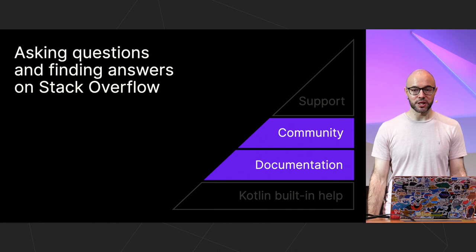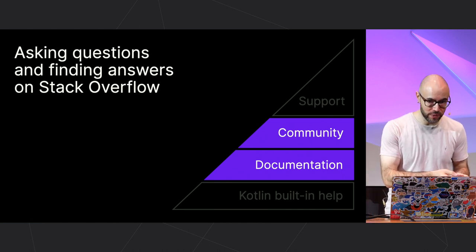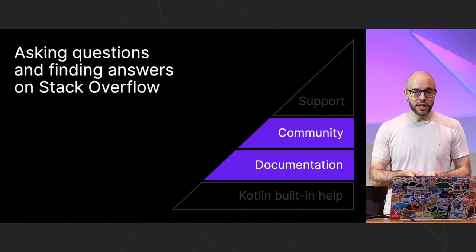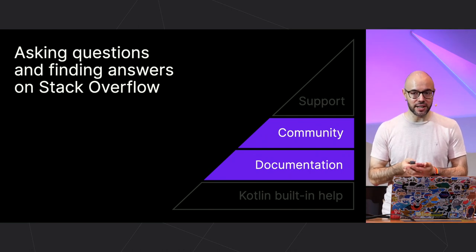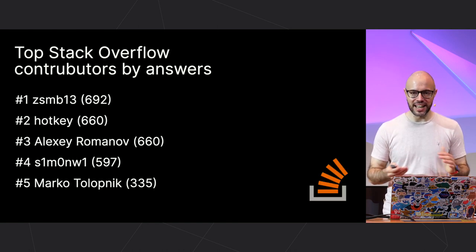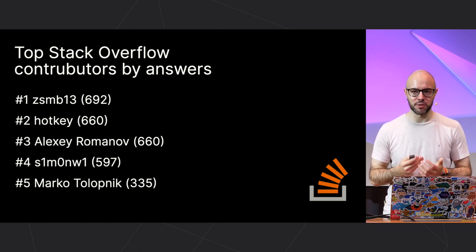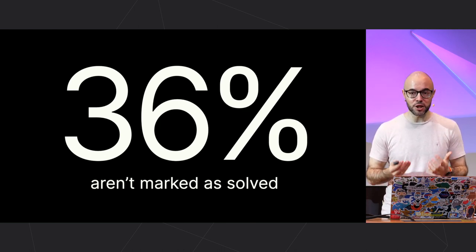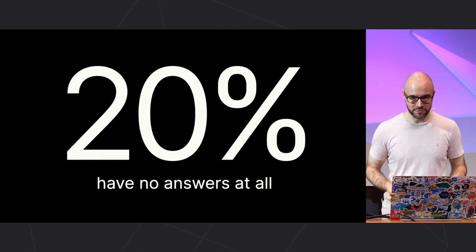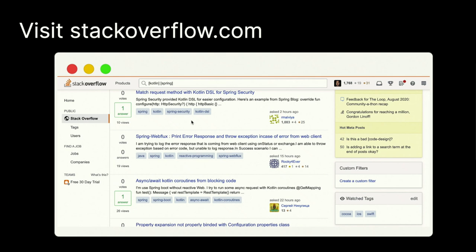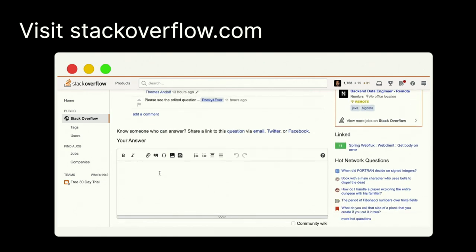At the second and third stages of this process, most developers start to look for help on Stack Overflow. So when you want to act on your desire to help other members of the community, the most effective way is just to go there. By answering questions on Stack Overflow, you help not only the original author but also all the people who will open that page afterwards — and there are lots of them. We already have many active contributors on Stack Overflow, but there are still a lot of areas where you can help. 36% of Kotlin Stack Overflow questions are not marked as solved, and 20% have no answers at all. So head over to Stack Overflow, select the tags that reflect your experience — like Kotlin, Spring, Ktor, or maybe Multiplatform — and help other people benefit from your expertise.